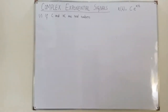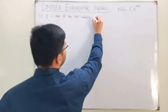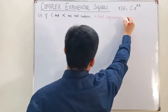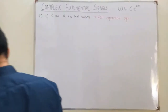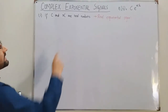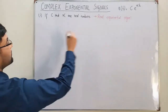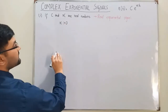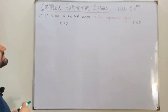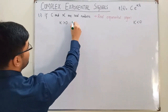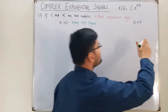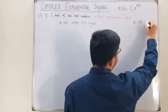The first case is that both c and α are real numbers — this would give us a real exponential signal. Depending on α: if α is greater than zero, this is the case of a rising exponential signal. If α is less than zero, meaning the exponent is negative, this is the case of a decaying exponential signal.